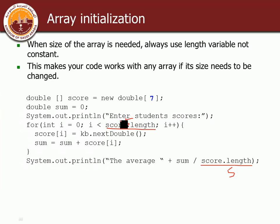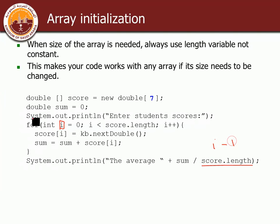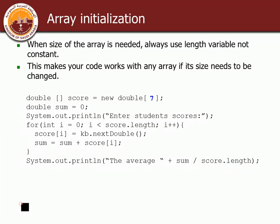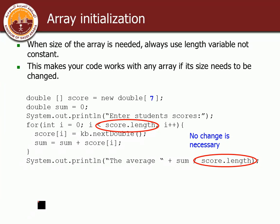If the size changes to seven, score.length becomes seven everywhere automatically. Also notice that using score.length for computing the average is cleaner — if you used a variable i instead, you'd need i minus one and it would have to be declared separately. score.length always gives you the number of elements, so dividing the sum by score.length gives you the correct average.